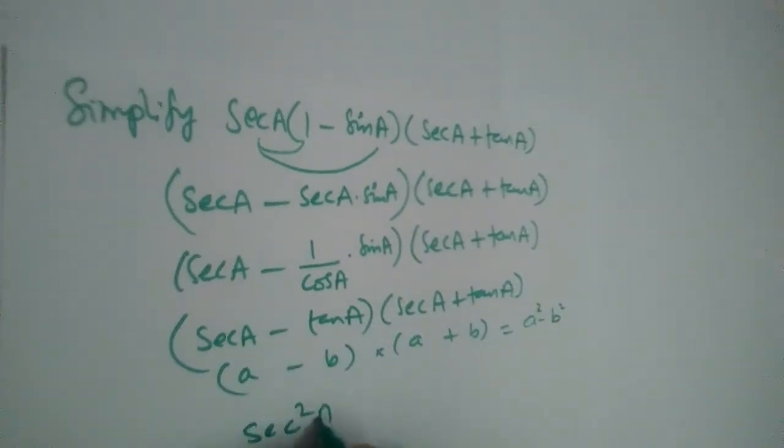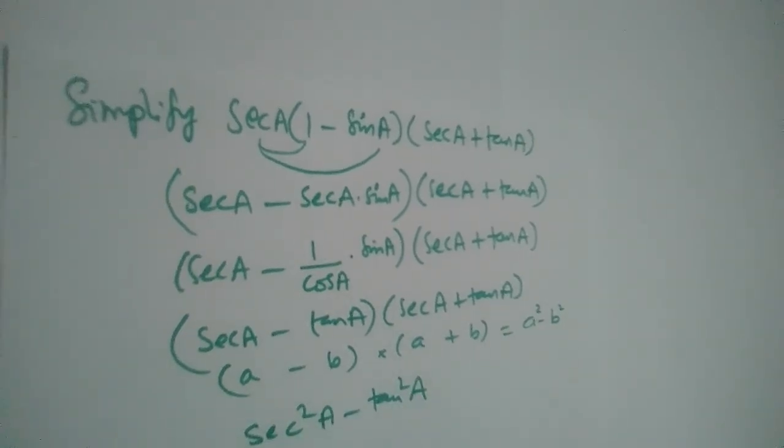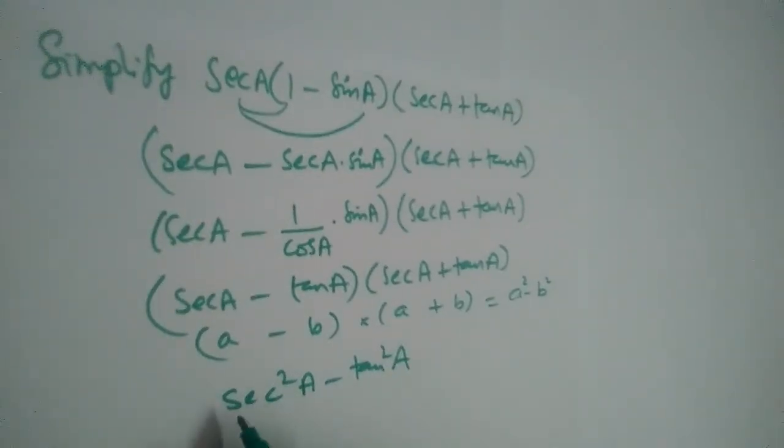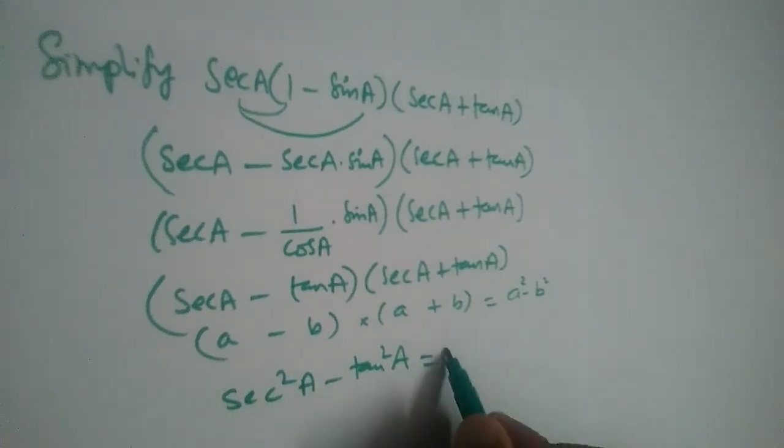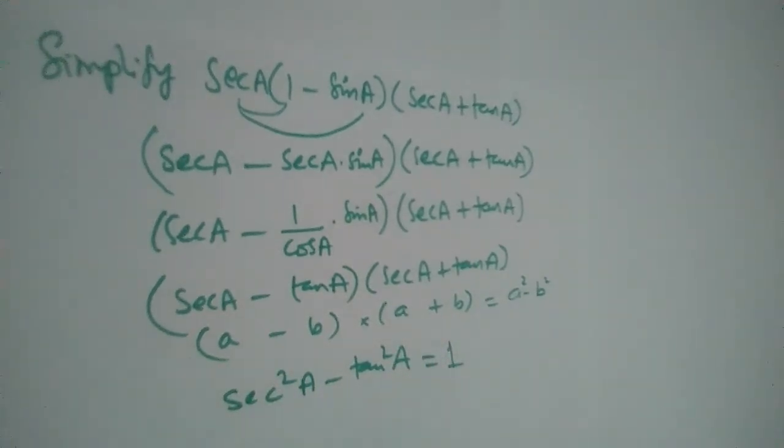But this is an identity, isn't it? Secant square A minus tan square A is equal to 1.